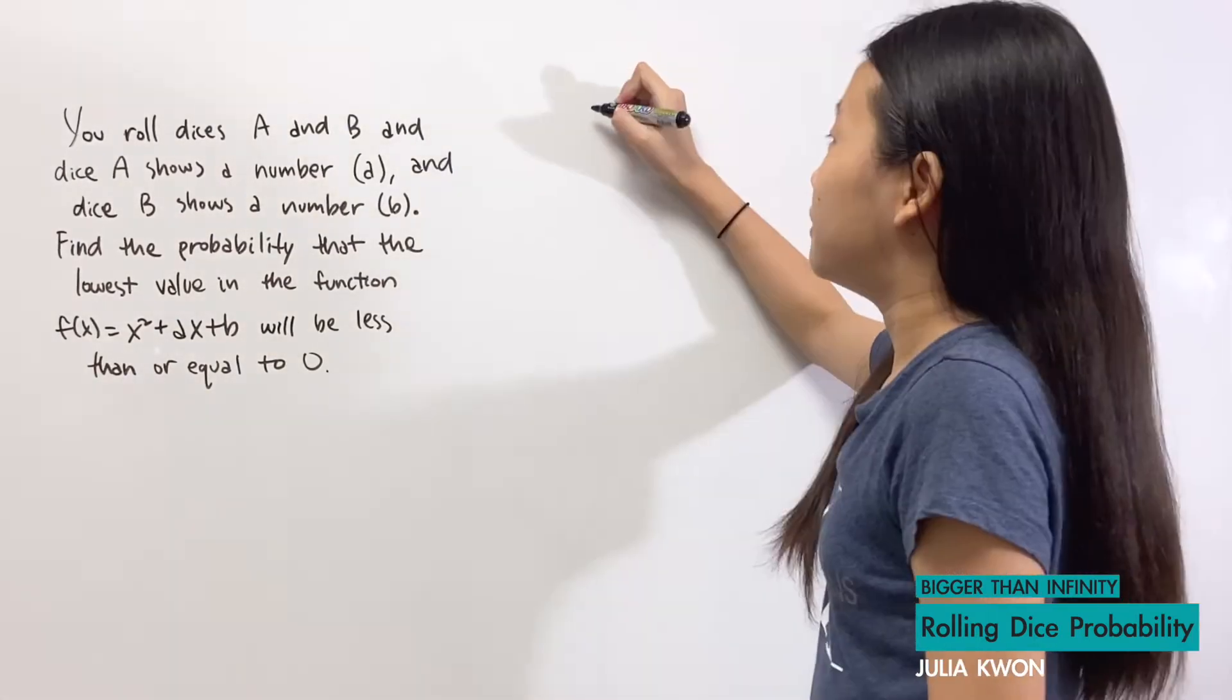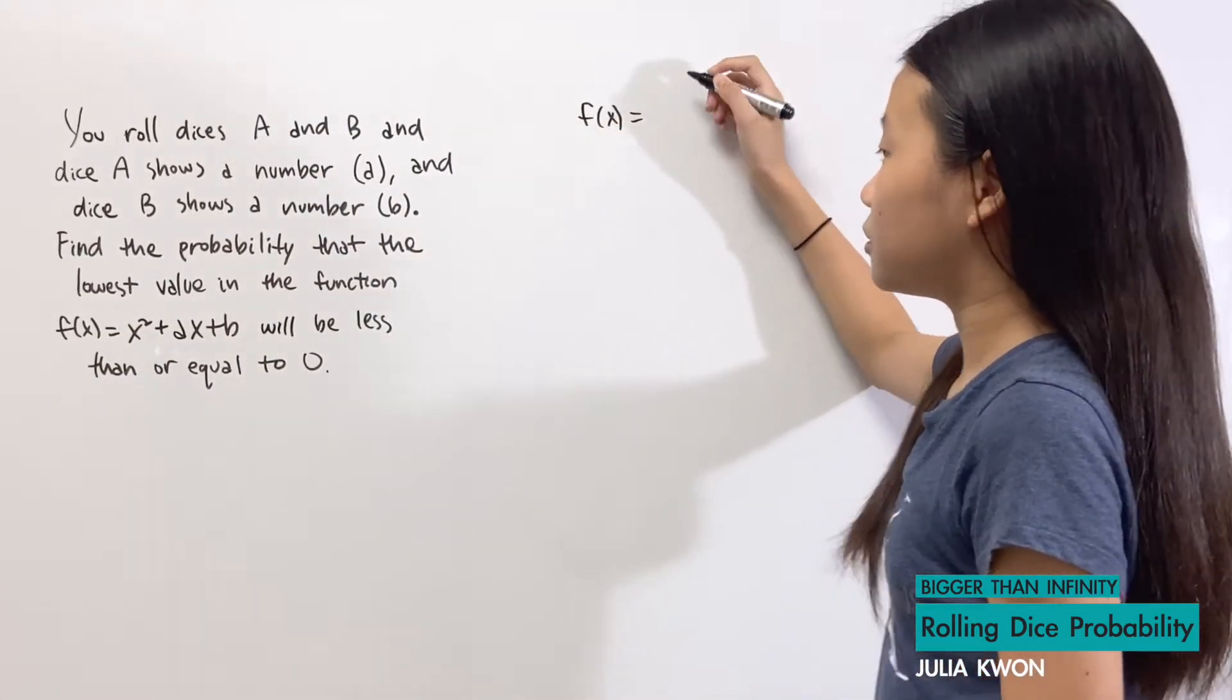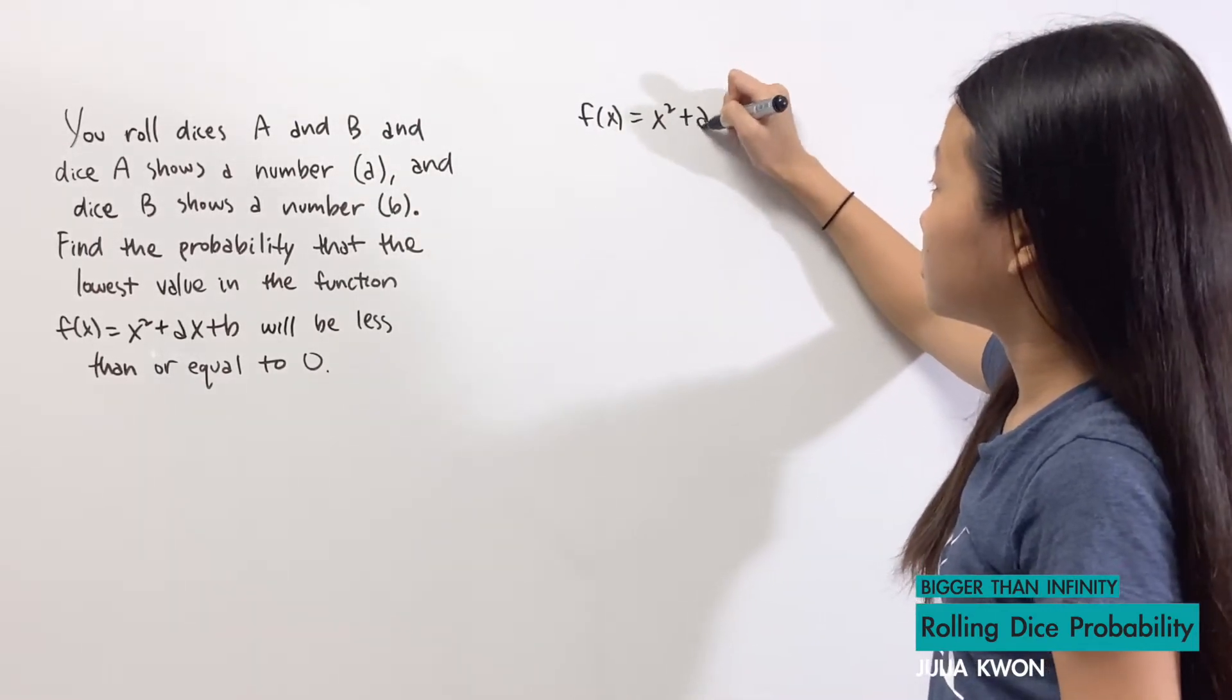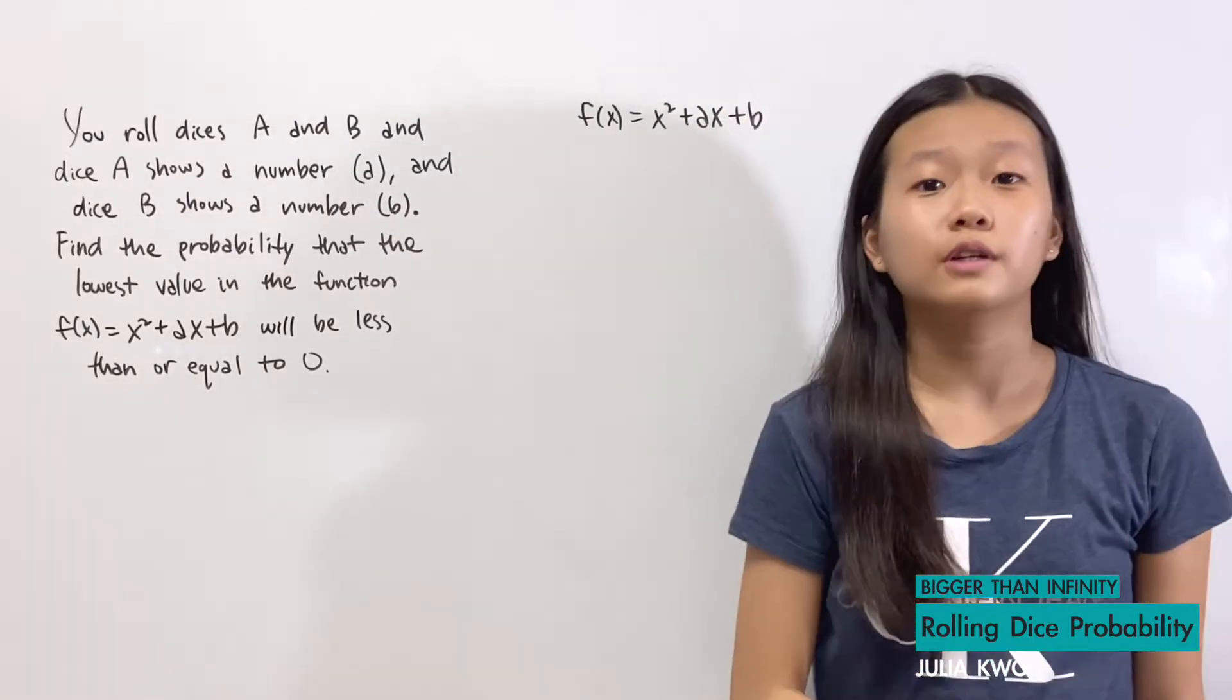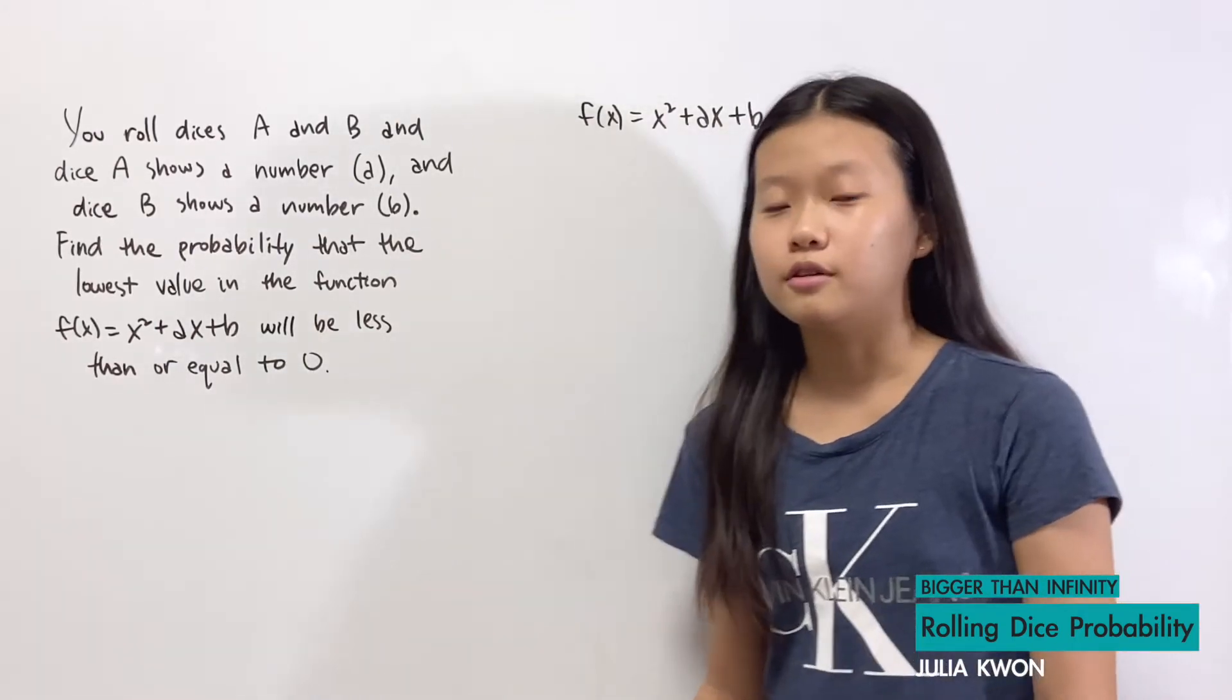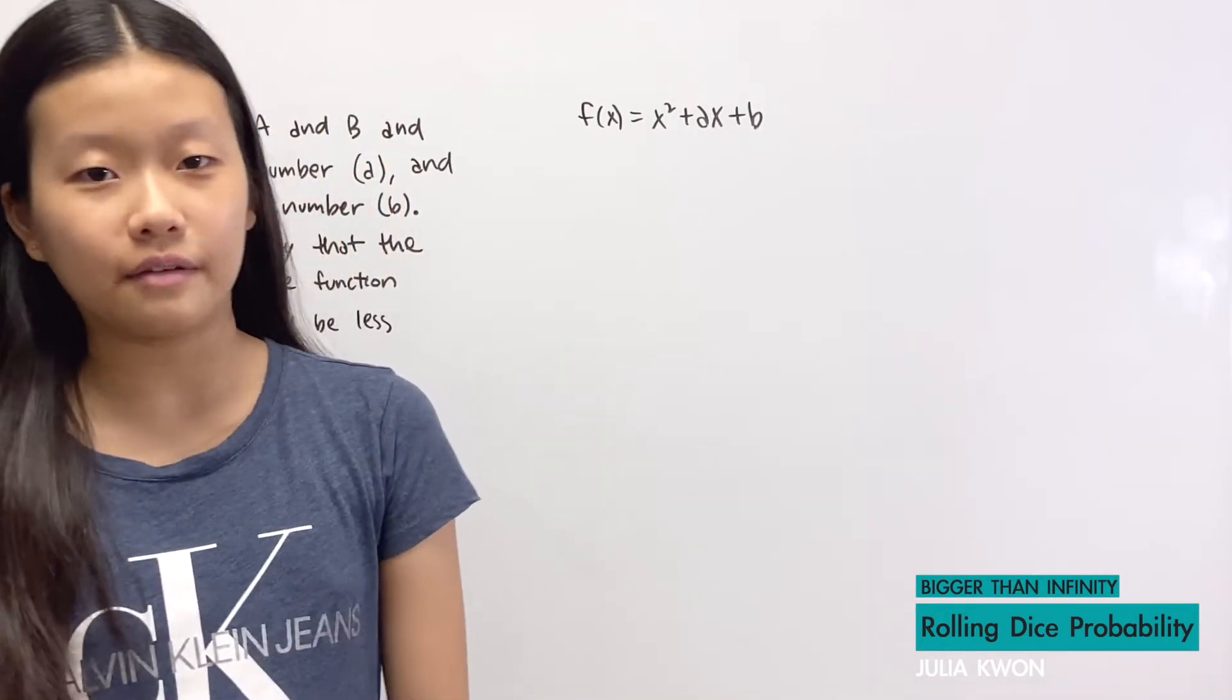We first have the function f(x) = x² + ax + b, and we're going to complete the square so that I can draw this function, or I can't really draw it because I don't know what the values of a and b are, but we'll get the idea of how this function looks like if I draw it.